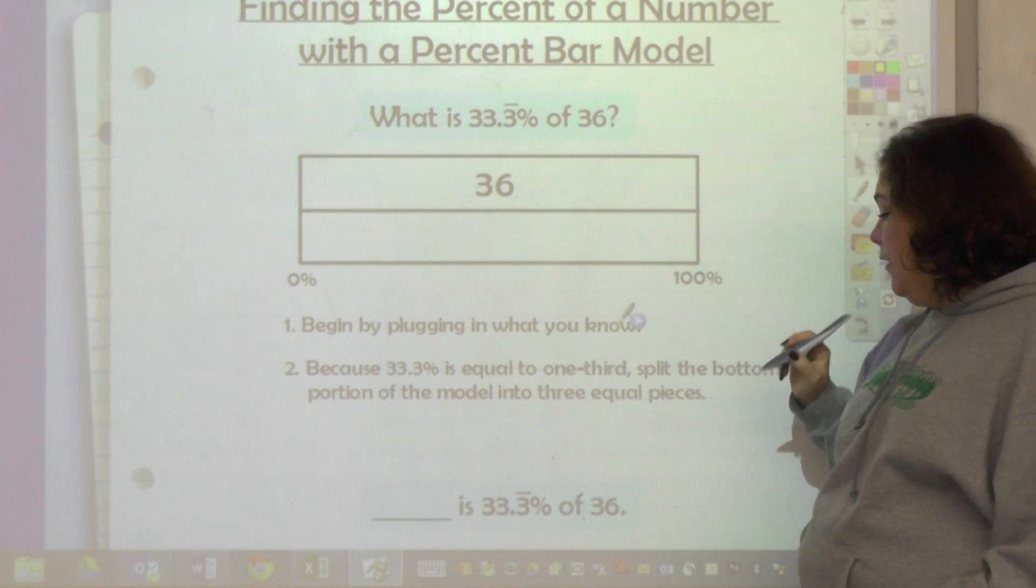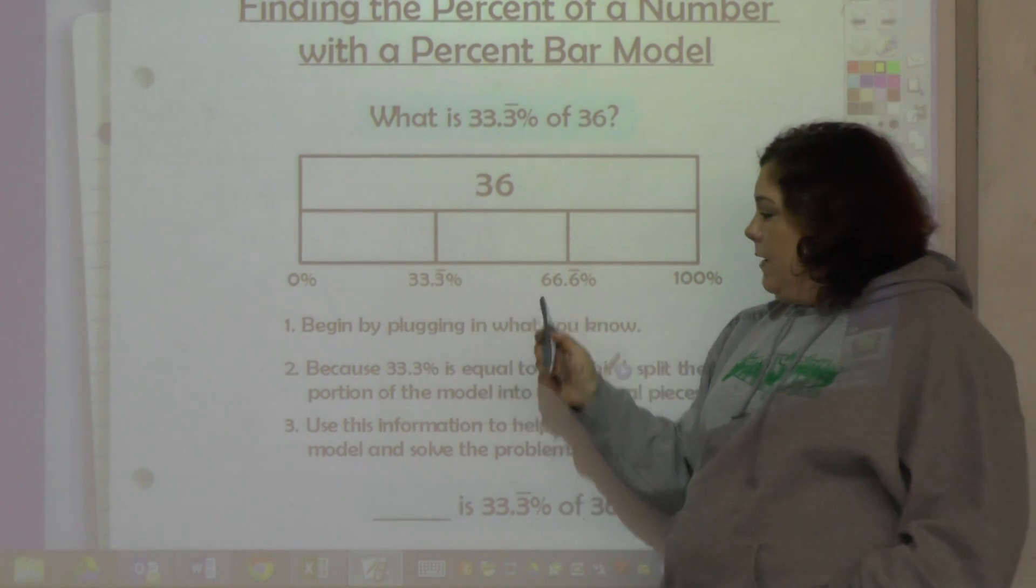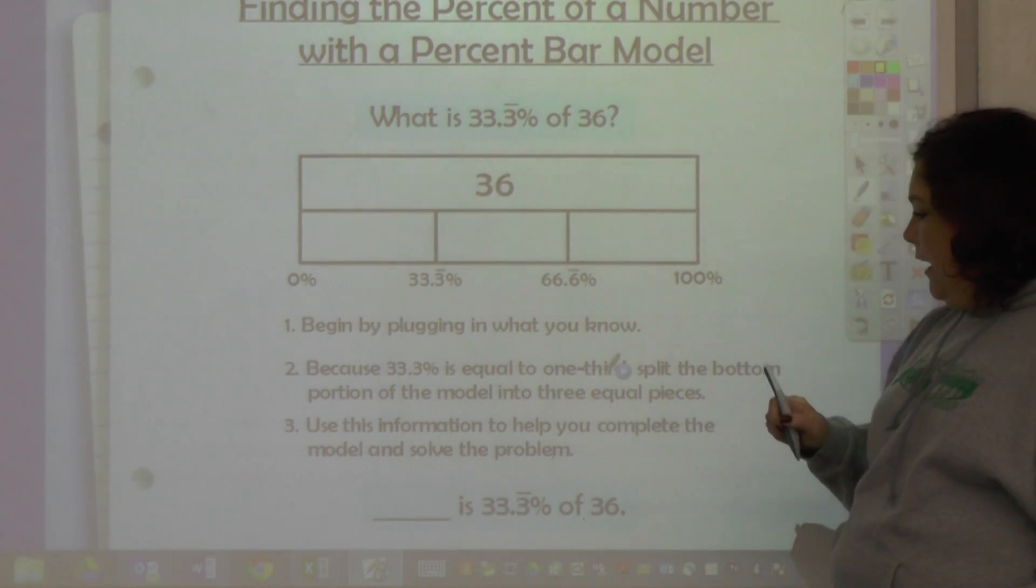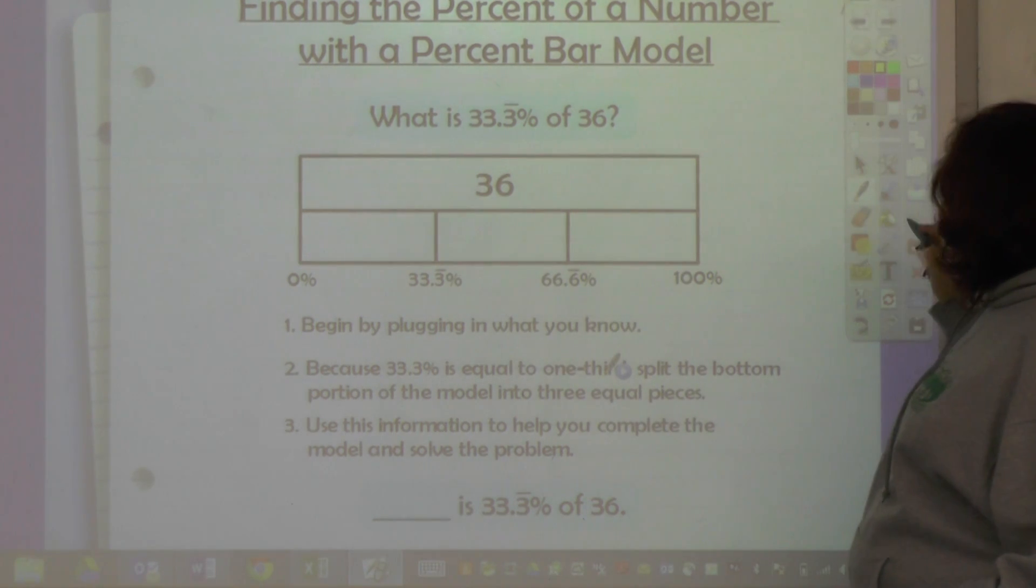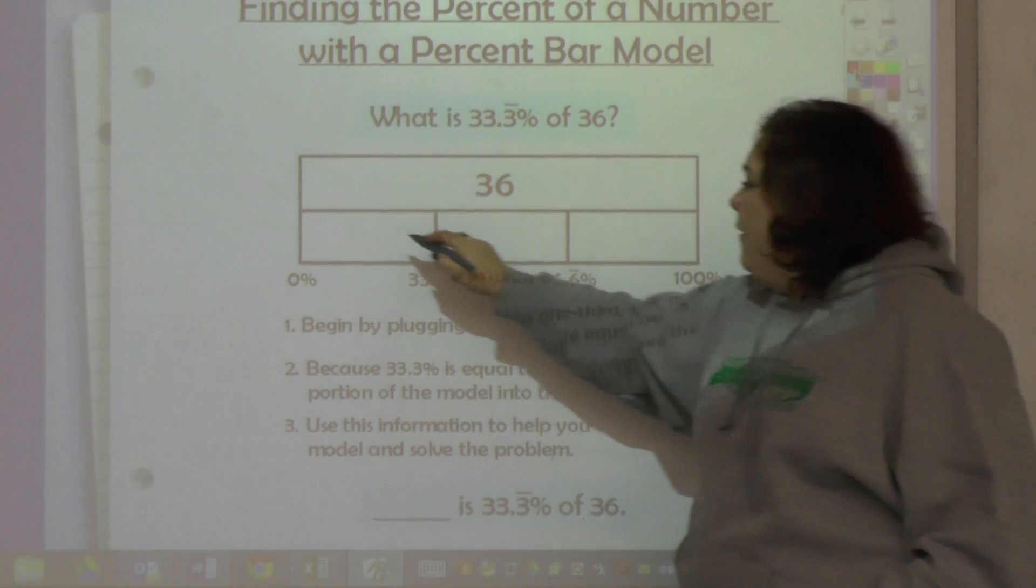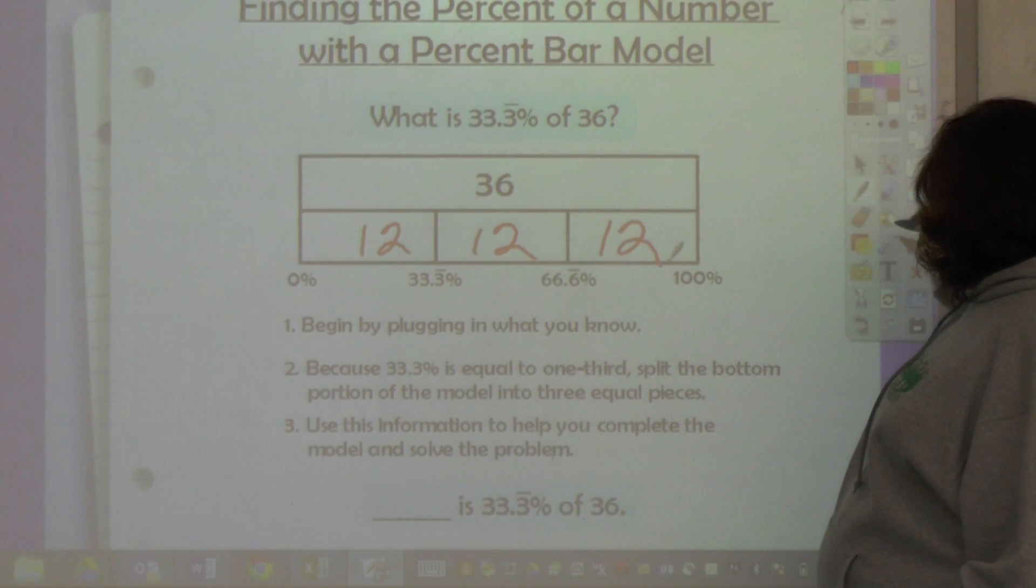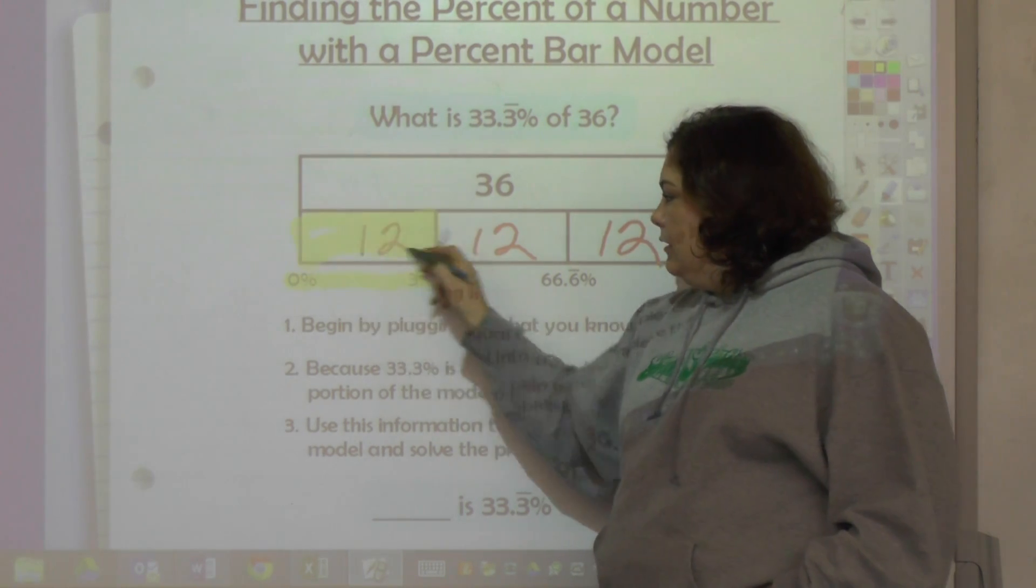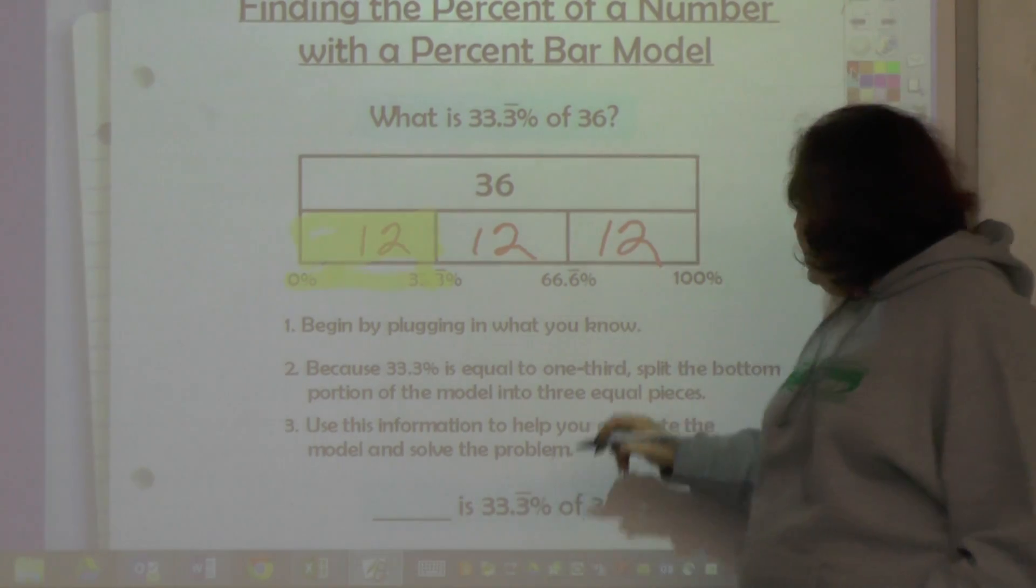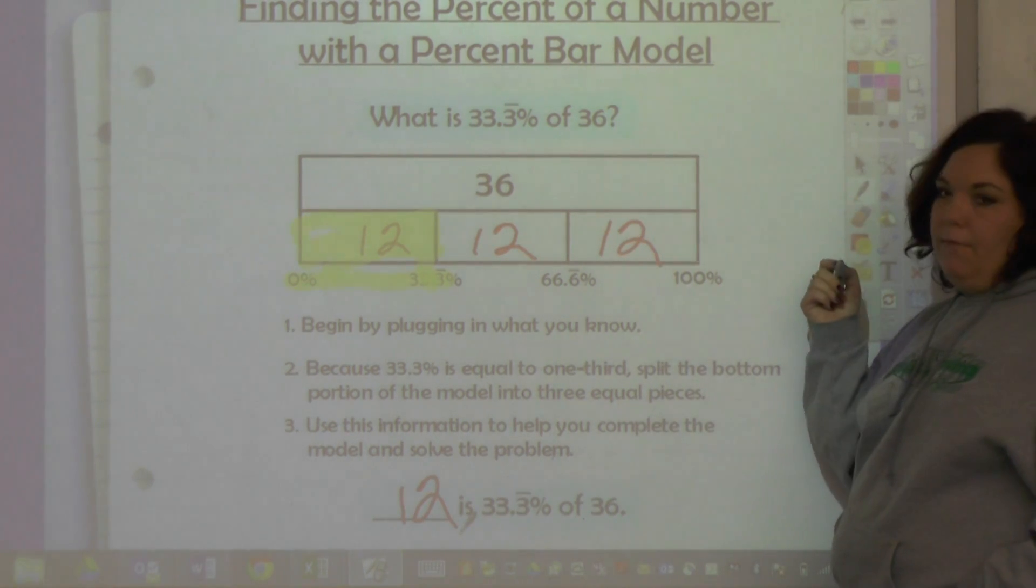So we split it into three sections. Here's our 33, and here's our 66. Now we have to say, I'm going to get 36 in the three boxes. 36 divided by three is 12, and I want to go to 33%, so that's this. So my answer is 12 is 33⅓% of 36.